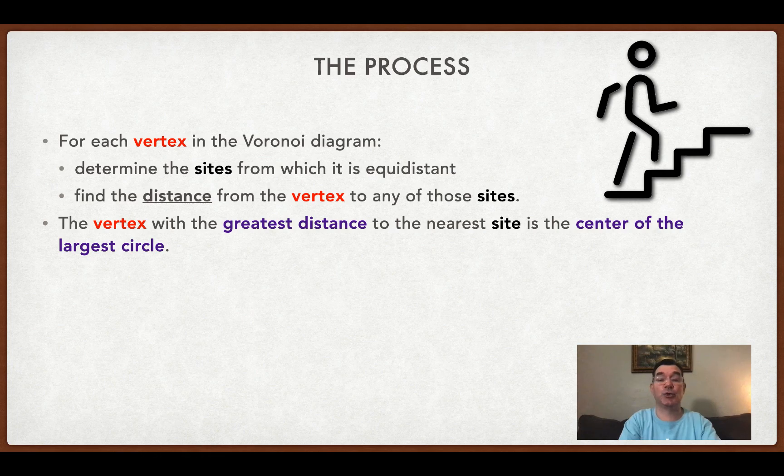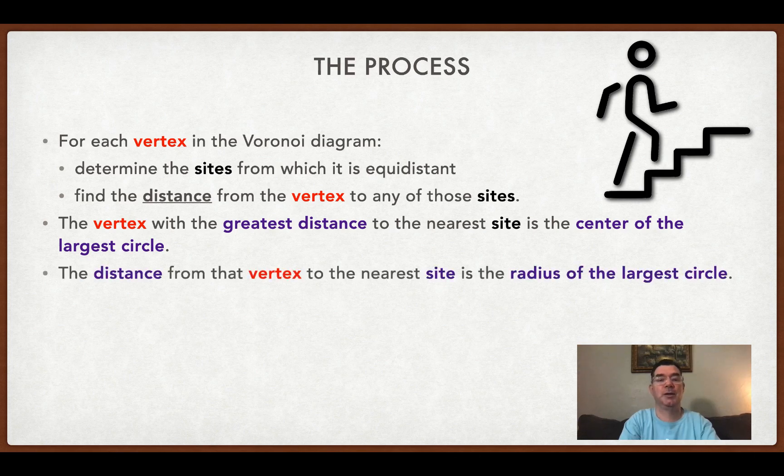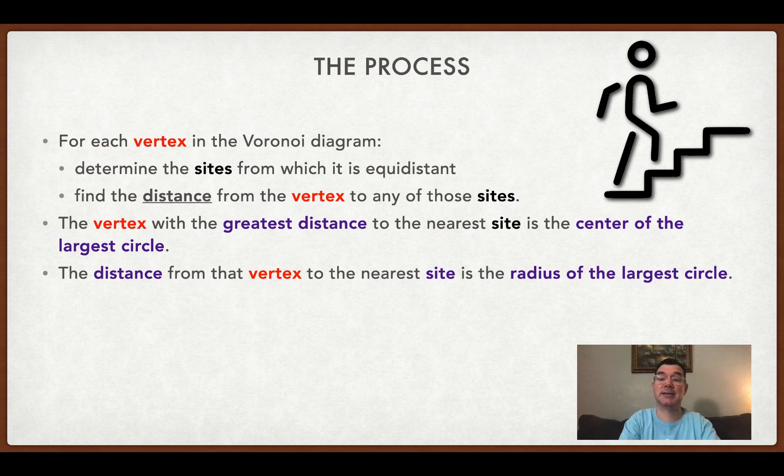So the vertex that has the greatest distance to the nearest site is going to be the center of the largest circle. The distance from that vertex to the nearest site is going to be the radius of that circle.